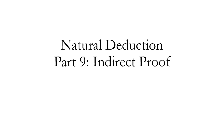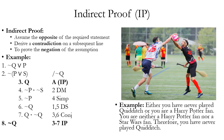Welcome back to Logic. In this video, we're going to demonstrate how to do natural deduction proofs using the indirect proof rule. Like the conditional proof rule, indirect proof involves making an assumption and then finding implications or consequences of that assumption using the inference rules or other rules allowing you to make an assumption. The goal of indirect proof is to generate a contradiction.